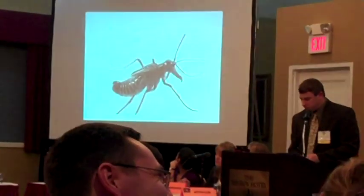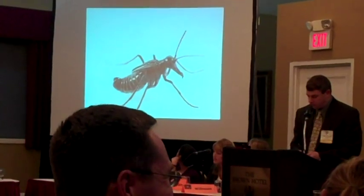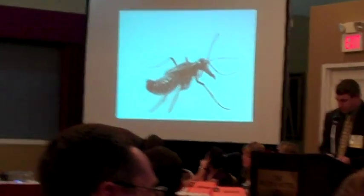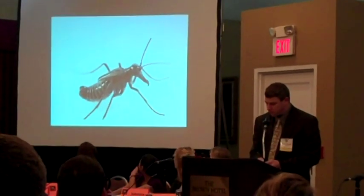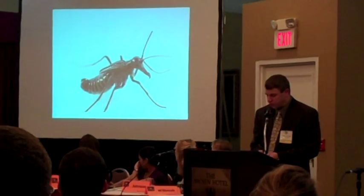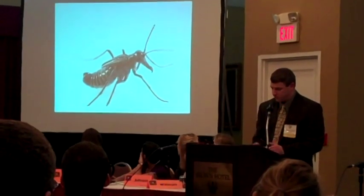This is a photograph of a snow scorpion fly. Males have unusual hardened forewings. What are these wings used for by these insects?